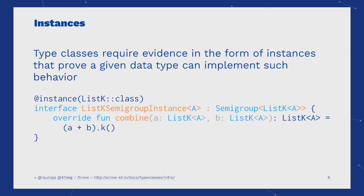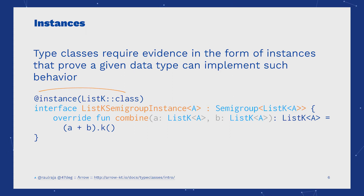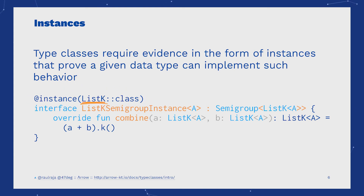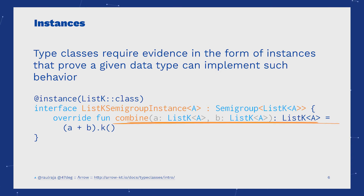We can define concrete instances of the type class targeting a given data type with the instance annotation. In this case, ListK is the target data type. We can see here how we are expressing how two different ListK values can be combined together.